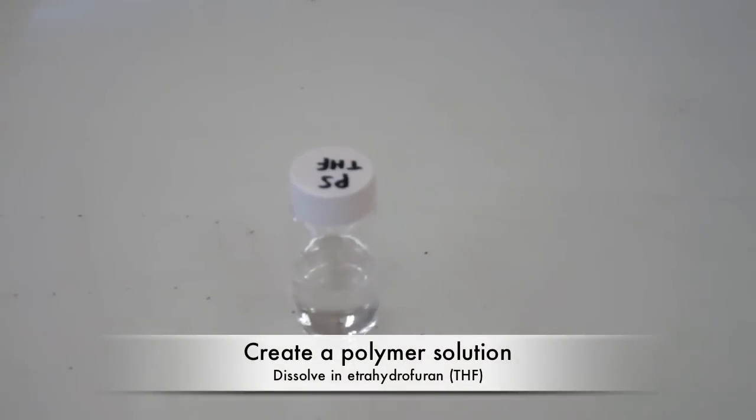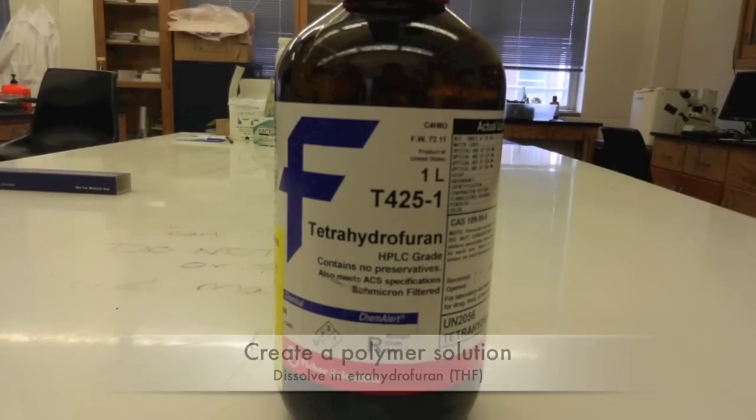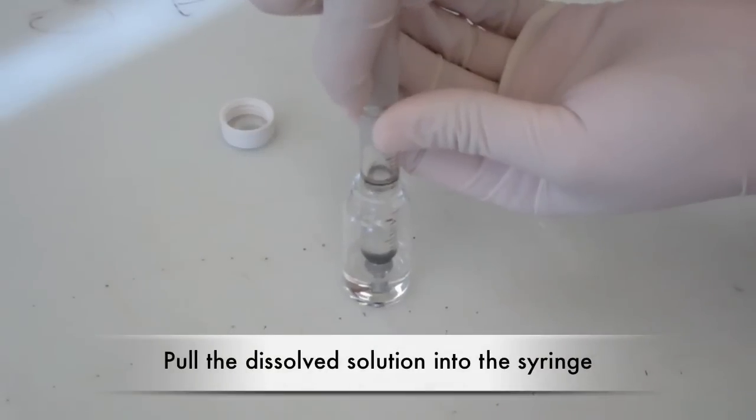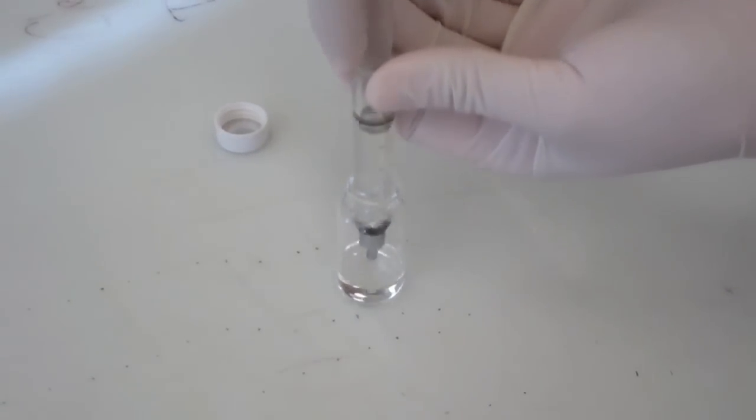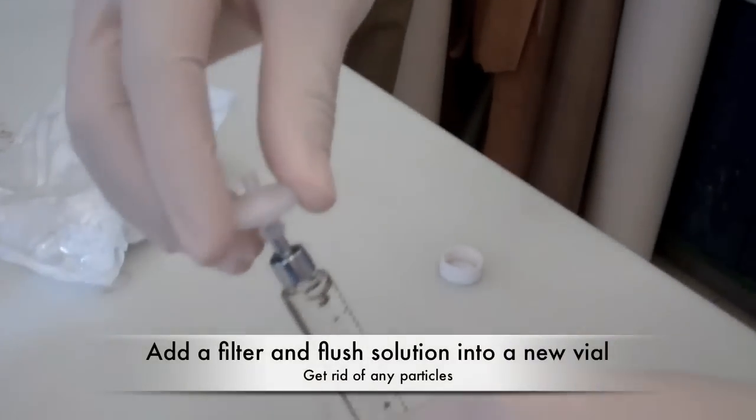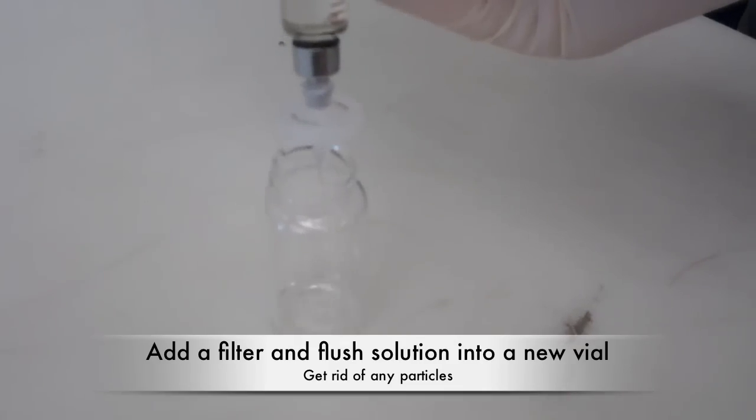To analyze your polymer sample, first dissolve the polymer with THF. Once dissolved, pull the solution into a syringe, then filter the solution to get rid of any particles that may clog the columns.